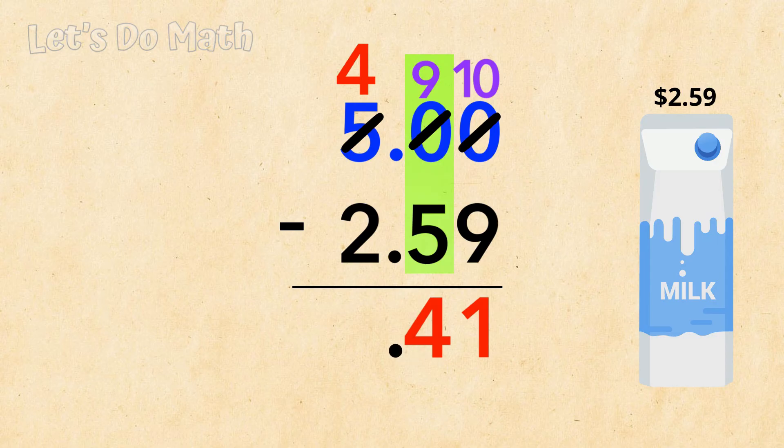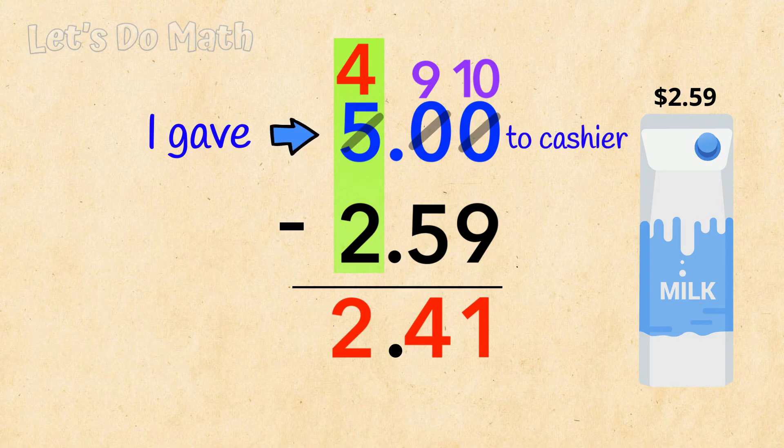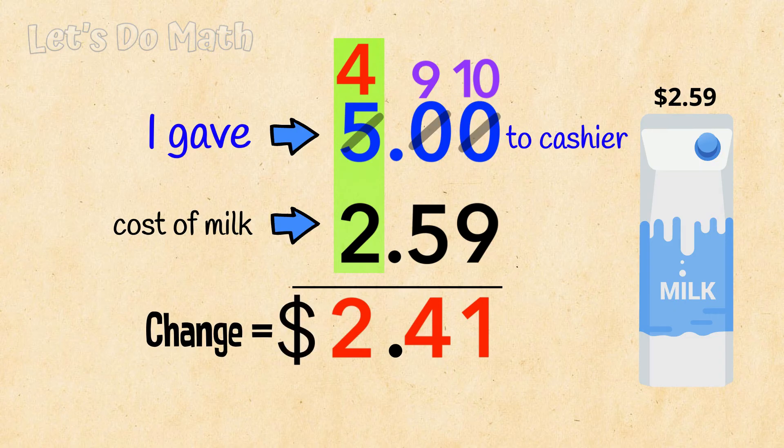Put in the decimal point. And now 4 minus 2 is 2. I gave $5 to the cashier, this is the cost of the milk, and here's my change: $2.41.